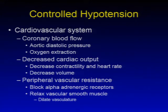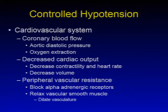Decreased cardiac output may involve decreased contractility and heart rate or decreased blood volume, and peripheral vascular resistance by blocking the alpha adrenergic receptors. This allows the relaxation of vascular smooth muscle to dilate the vasculature.